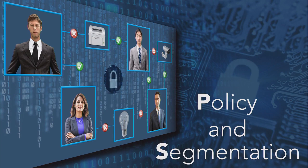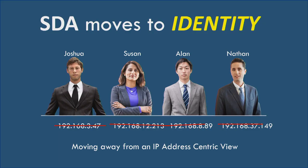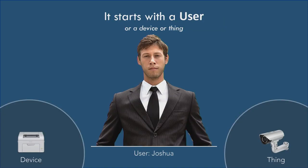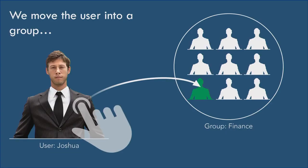Now we get to policy and segmentation. How do we get policy and segmentation in place? We need to move away from the IP address and move to identity — that's the first step. Identity is everything. We have different people — let's focus on Josh. We don't care what his IP address is anymore. On our network we have printers — Josh has to be able to print — and IoT devices; there's no reason why Josh would be talking to an IoT device. So we put users into groups. You already did that in Active Directory. Josh is in the finance group. Let's just take your Active Directory structure, suck it in, and we already have all this defined — not a whole lot of work because we're using your current structure.